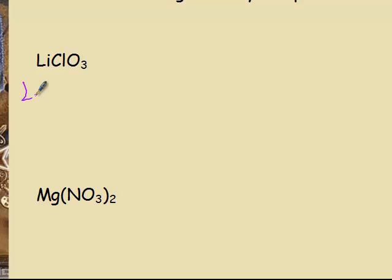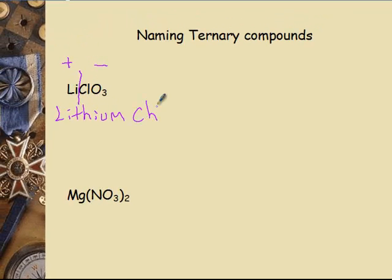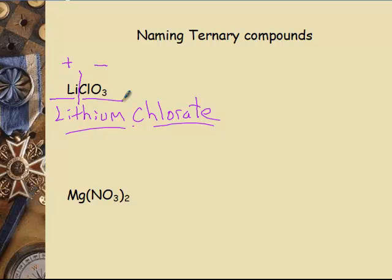The first example is lithium — no Roman numeral, it's in the first column. Now if you find yourself trying to be creative, like 'chloro-oxy-something,' you know you're doing it wrong. Remember, ionic substances are a positive and negative ion. The positive ion is lithium; the negative ion you look up on the polyatomic ion list, and that one is named chlorate. So it's lithium chlorate.